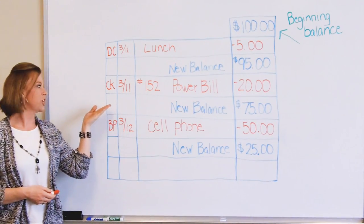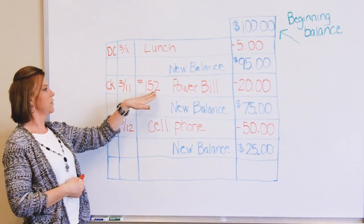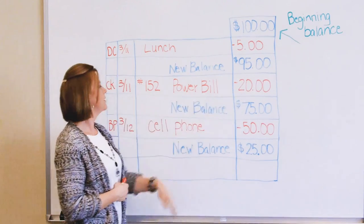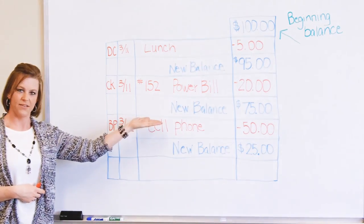In our second line, we have a check, the check number here, and it's for a power bill. We've minused out the $20, bringing us to a new balance of $75.